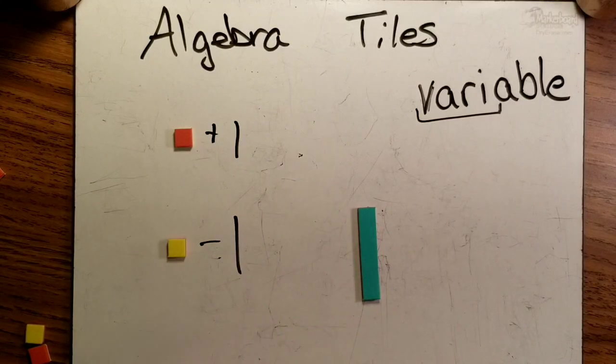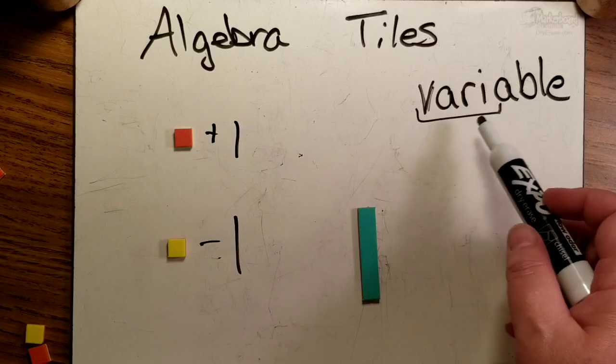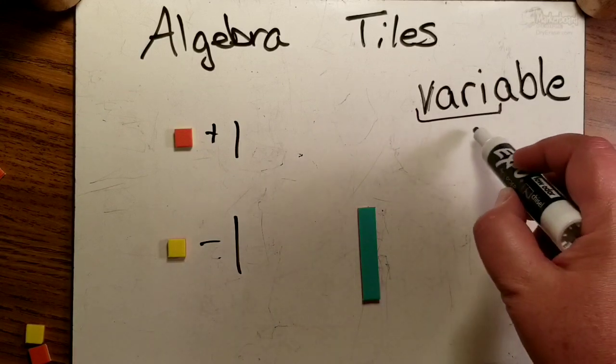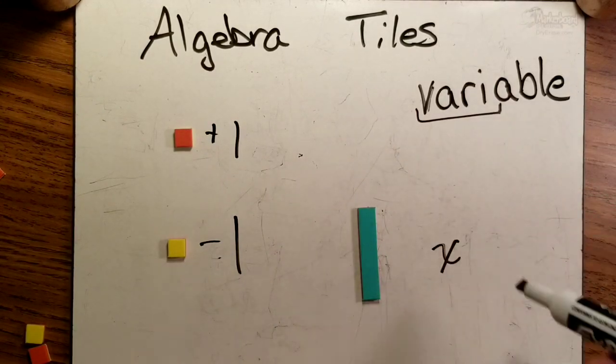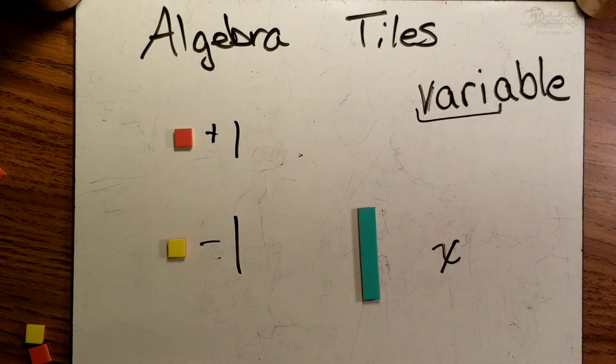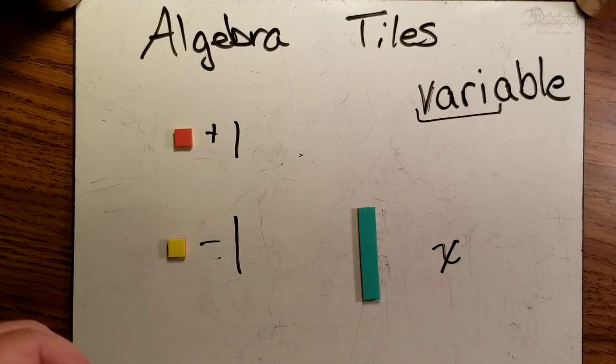But that's not how it works on these algebra tiles, because the variable means an x. So we'll say we don't know what it is. On one problem, x could equal two, another problem, x equals three. On fractions, yes, you compare the size, but on algebra tiles, you do not.